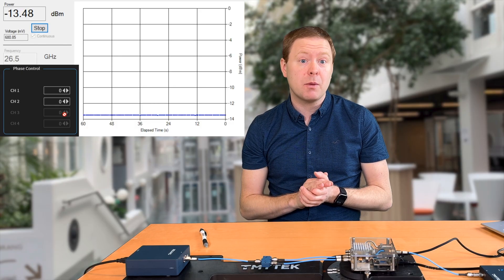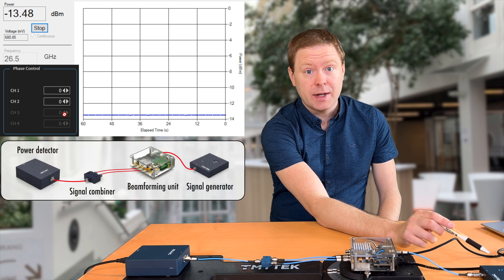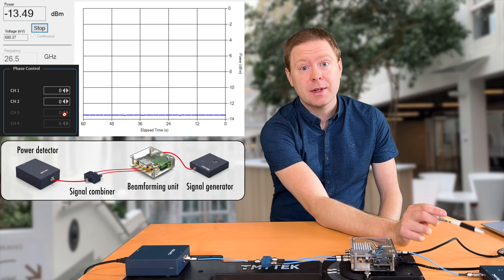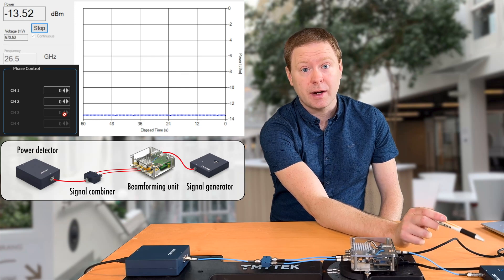Here is the experimental setup that I will be using in this video. Over here we have the signal generator, 26.5 GHz. That is the carrier frequency of the sinusoidal signal that it generates.